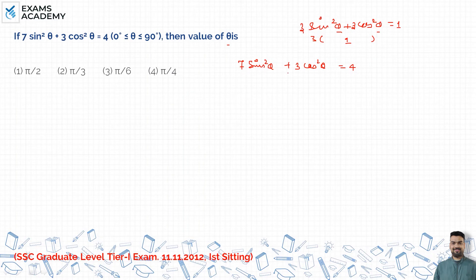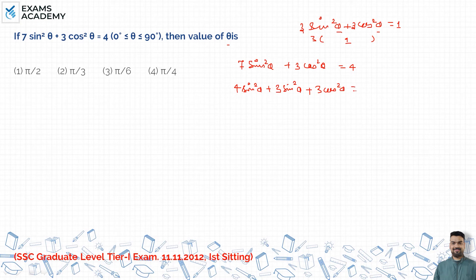अब यहाँ पर देखे — 7sin²θ में से 3cos²θ, यहाँ पर 7 है, तो मैंने इसे break कर लिया। इस तरह से 4sin²θ अलग ले लिया, और 3sin²θ अलग ले लिया। तो 3sin²θ + 3cos²θ को common लेते हैं — sin²θ + cos²θ = 1।